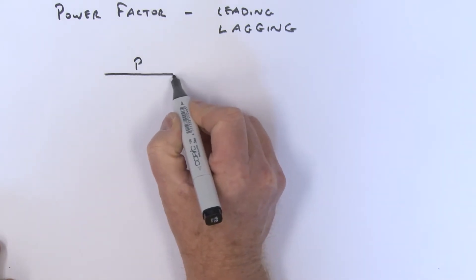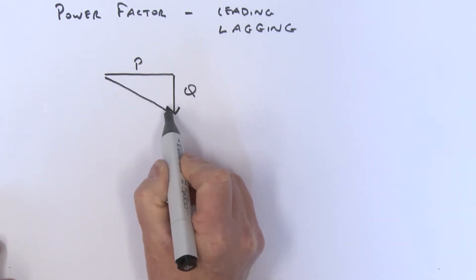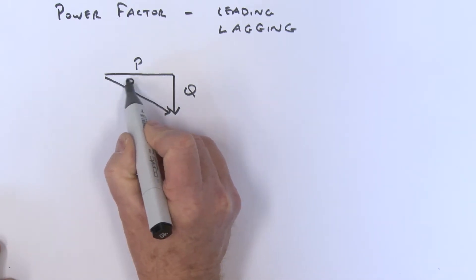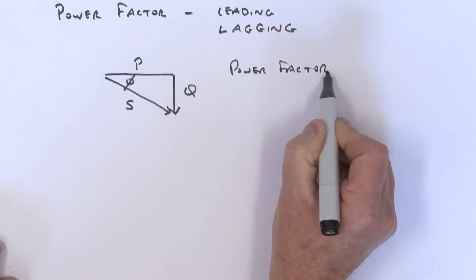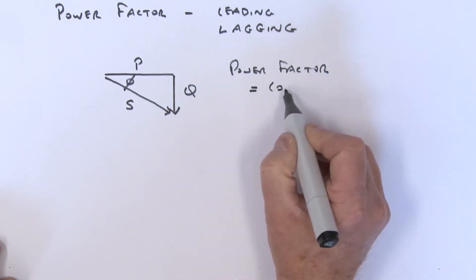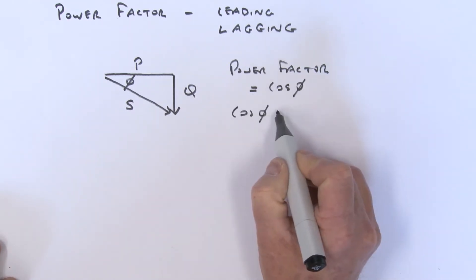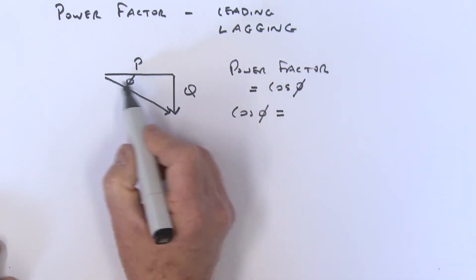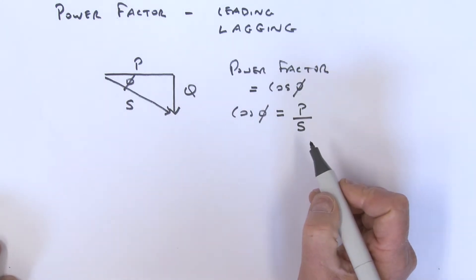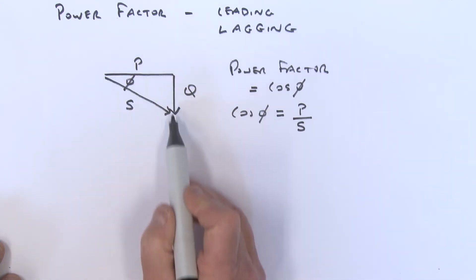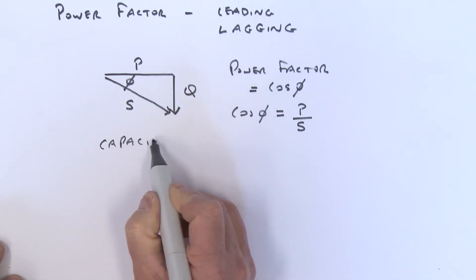The other situation has our real power and reactive power Q now in the opposite direction, giving us apparent power S and angle phi. We can still say that the power factor is equal to the cosine of phi, which is the true power divided by the apparent power. In this type of circuit we say it is capacitive in nature.